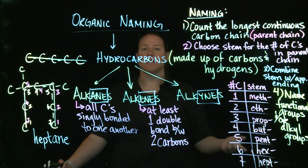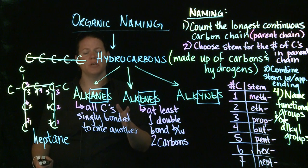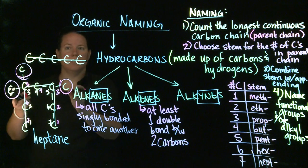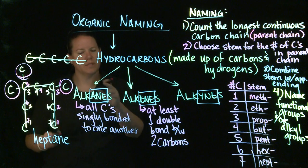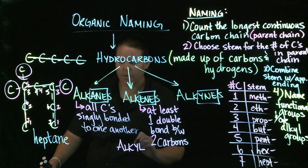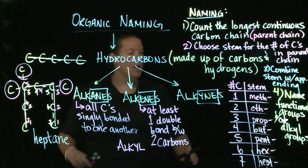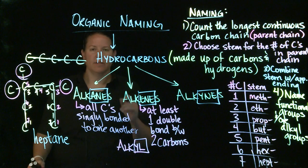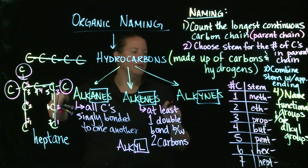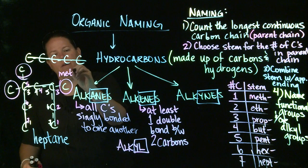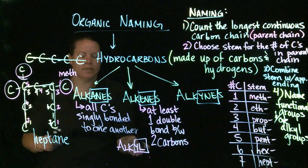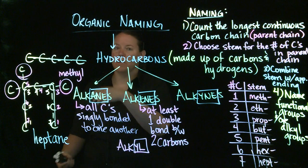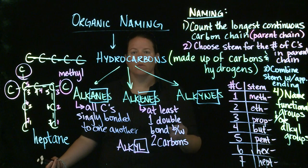Alkyl groups are carbons and hydrogens that are not named as part of the longest continuous carbon chain — you circle all of them. You count the number of carbons in what you've circled, find a stem for those, and then add the ending -yl to indicate it's an alkyl group. For instance, a one-carbon branch has the stem meth, and adding -yl gives you methyl.